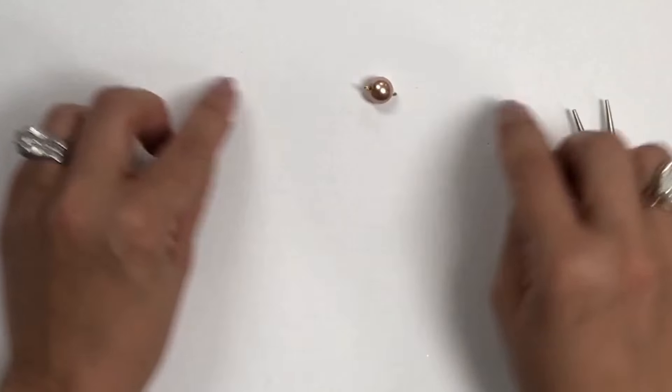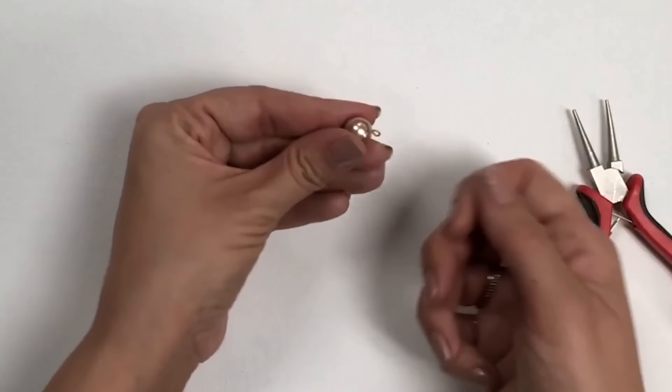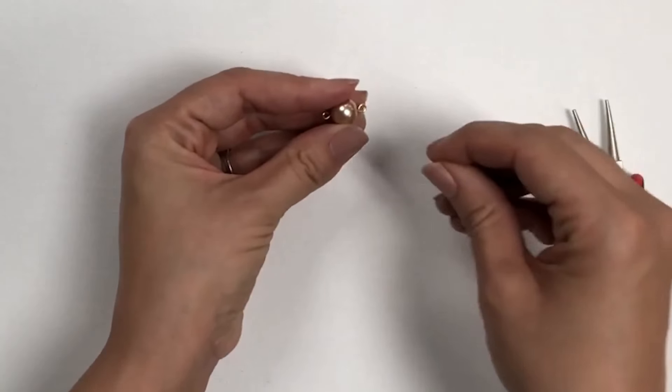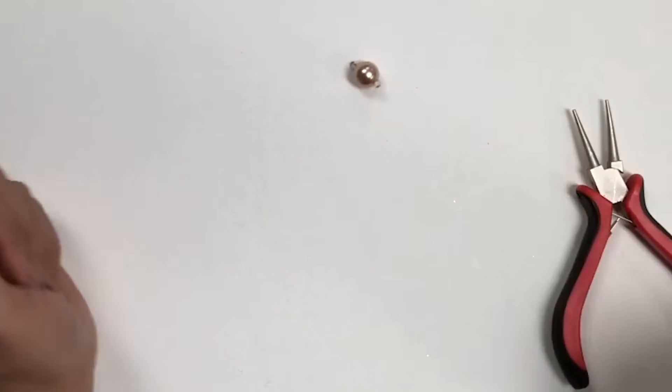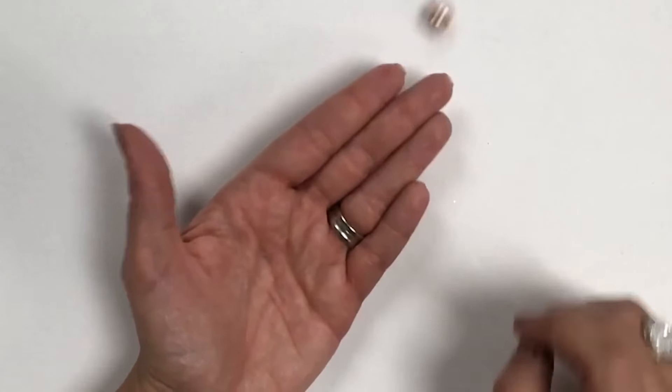From here, if you wanted to make several of these, you can just open your loop and connect them together and close them back. That is it on making loops and using eye pins. Make sure you check back for other tutorials using jump rings.